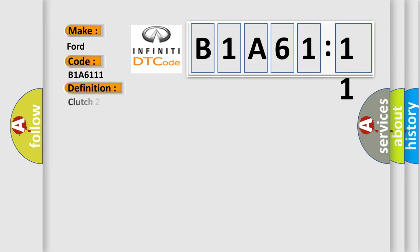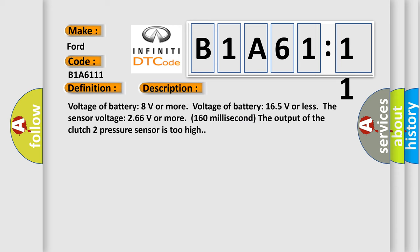The basic definition is clutch 2 pressure sensor system output high range out. And now this is a short description of this DTC code. Voltage of battery 8 volts or more, voltage of battery 16.5 volts or less. The sensor voltage 2.66 volts or more for 160 milliseconds. The output of the clutch 2 pressure sensor is too high.